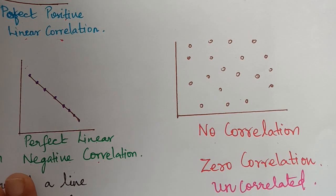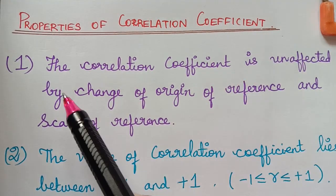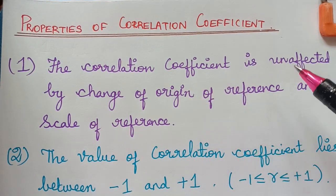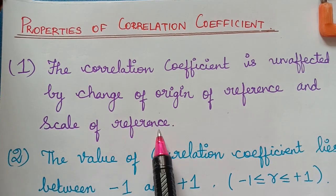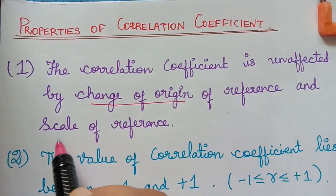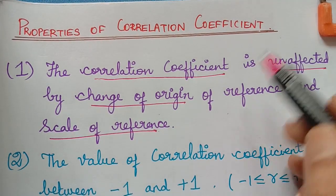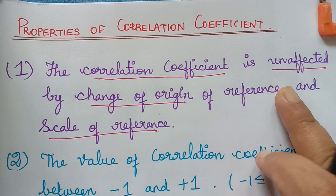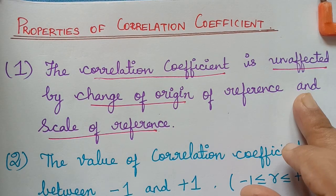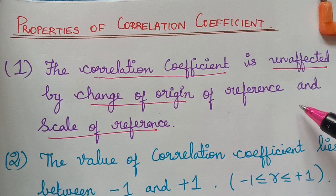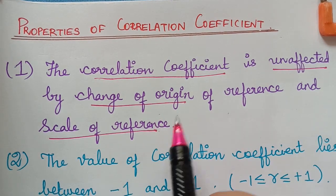Next we are going to learn the properties of the correlation coefficient. The first property is that the correlation coefficient is unaffected by the change of origin of reference and scale of reference. So when we change the origin and the scale of reference, the value of the correlation coefficient will be unaffected. This is a very important property which we will apply when solving problems by changing origin and scale to evaluate the correlation coefficient.